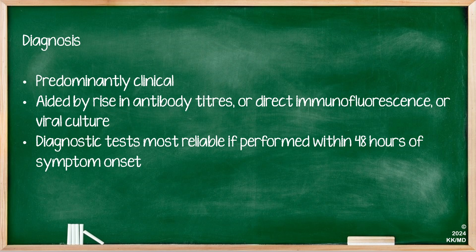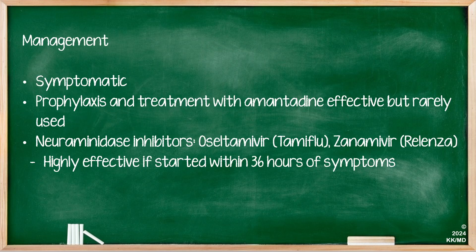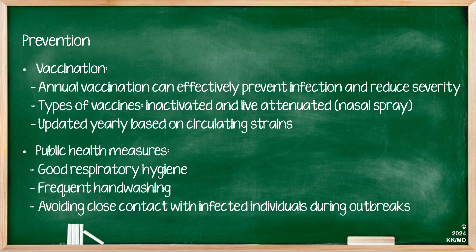Diagnostic tests are most reliable if performed within 48 hours of symptom onset. The management of flu is symptomatic. Prophylaxis and treatment with amantadine, which is an M2 inhibitor, can be effective but is rarely used. Neuraminidase inhibitors such as oseltamivir and zanamivir are highly effective if started within 36 hours of symptoms. Prevention is predominantly via public health measures and vaccination — for example the annual flu vaccination programme run by the NHS for healthcare workers and vulnerable populations. The types of vaccines available are an inactivated vaccine and a live attenuated nasal spray version.